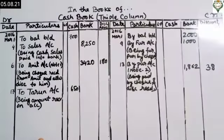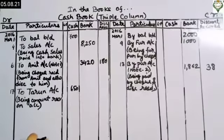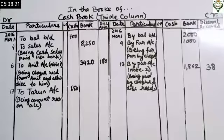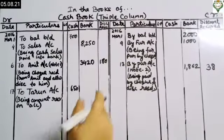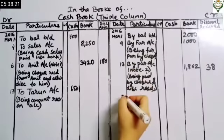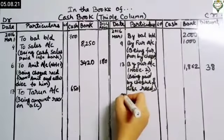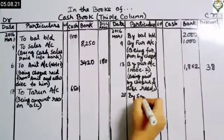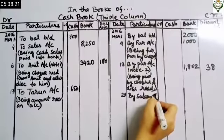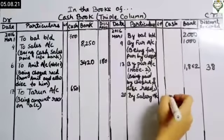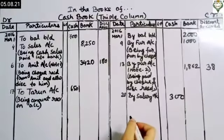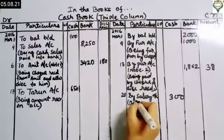On 20th March, drew from cash and paid salary of ₹300. We are paying salary through cash, so record on the credit side: 'By Salary Account' with ₹300 in the cash column. Narration: 'being salary paid'.